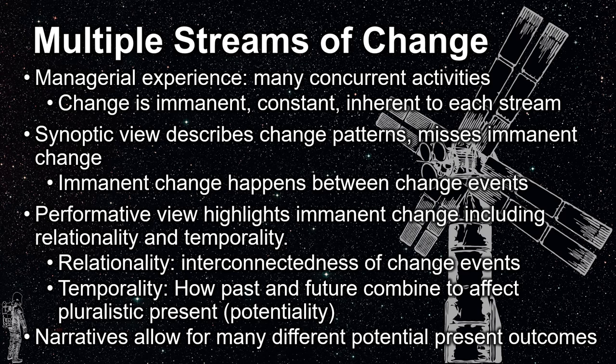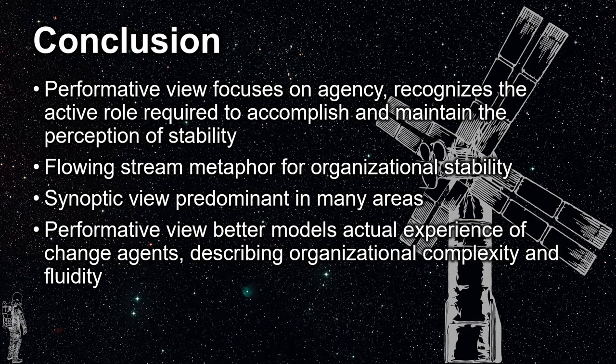The chapter also acknowledges the role of narratives discussed back in chapter 22 — narratives provide the impulse for many of the potential outcomes in the present. The performative view focuses on agency and, in doing so, recognizes the active role required to accomplish and maintain the perception of stability. Interestingly, organizations are described as a flowing stream that generates temporary vortices or eddies that provide a perception of stability in a limited region, similar to the eye of a hurricane. Of course, these areas of stability are fleeting and are reconstituted over and over. Organizationally, these periods of stability are due to the active agency of change agents.